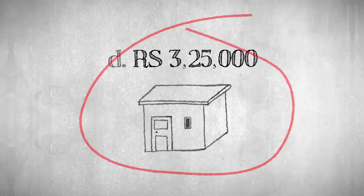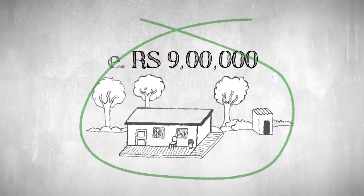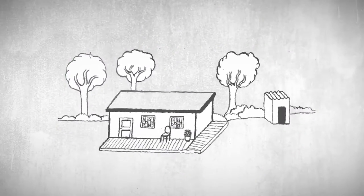Most people selected 3,25,000, but you know what? It is actually around 9 lakh. To be precise, if all the wealth were divided equally, then each family would get 9 lakh.